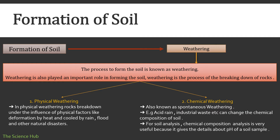In physical weathering, rocks break down under the influence of physical factors like deformation by heat and cold, rain, flood, and other natural disasters. Then comes chemical weathering, also known as spontaneous weathering. For example, acid rain and industrial waste can change the chemical composition of the soil.